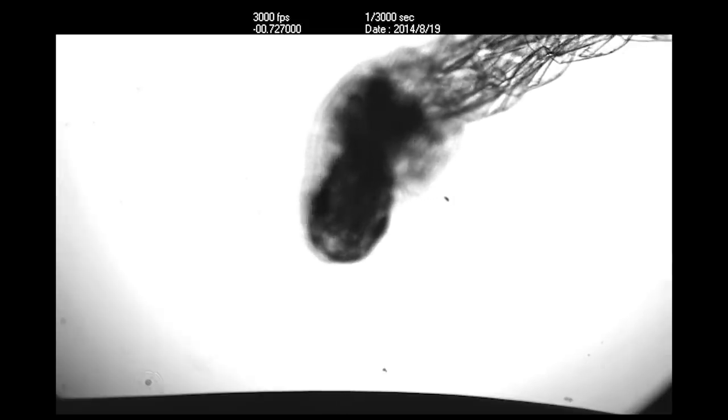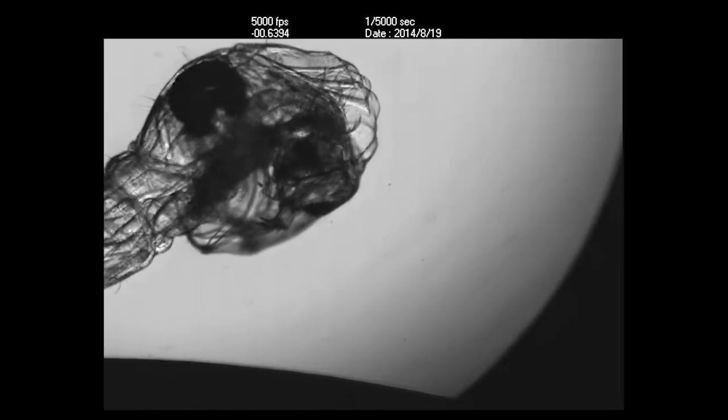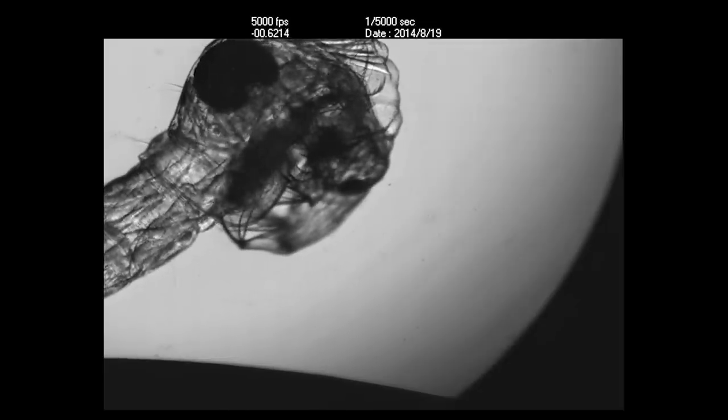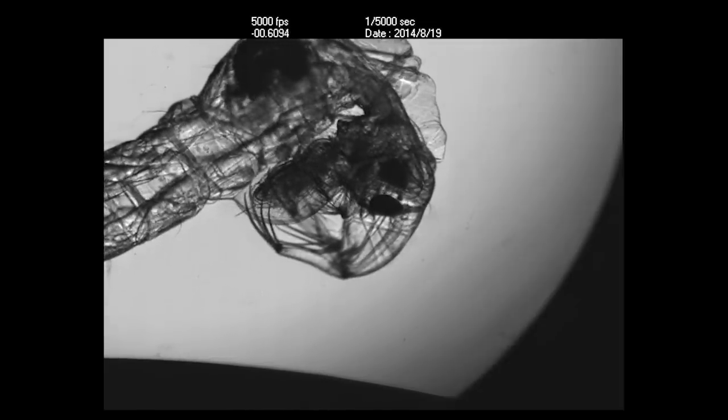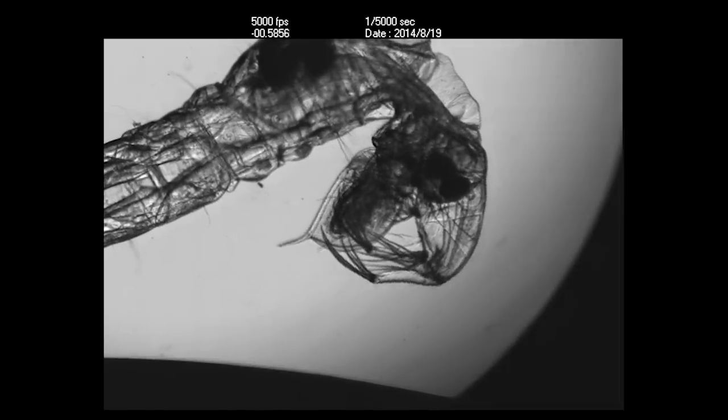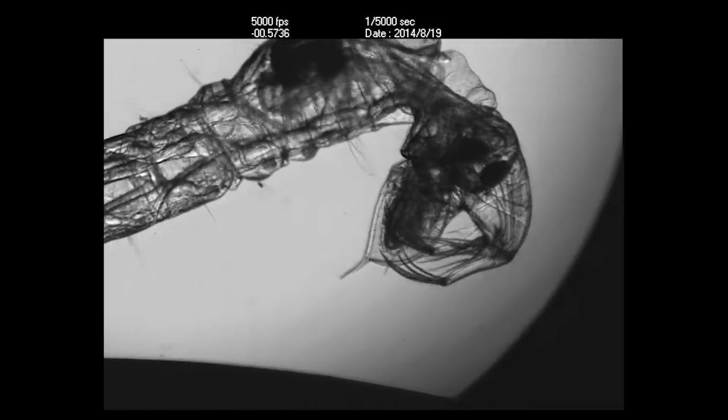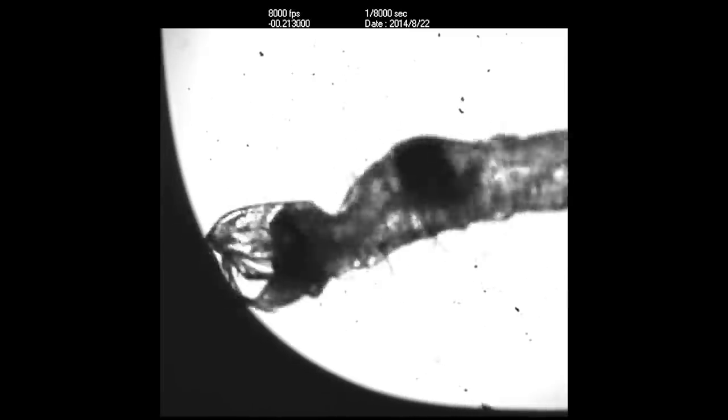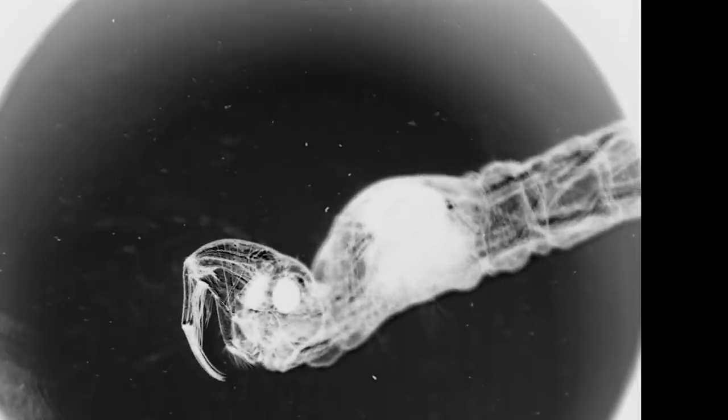After the glass worm has its prey safely ensnared, it needs around 40 more milliseconds to retract and then swallow the prey. But as you can see from this real-time footage, that's still pretty fast.